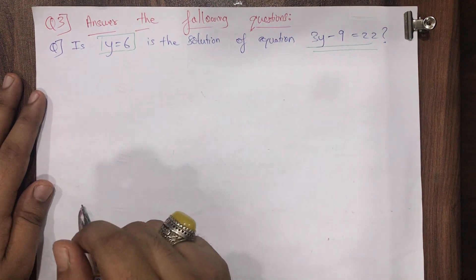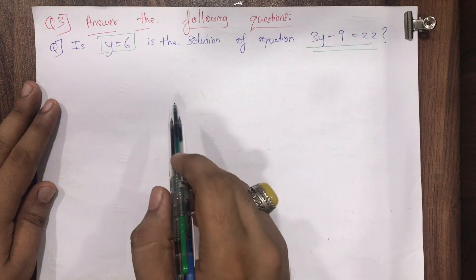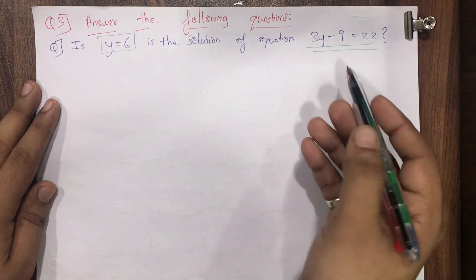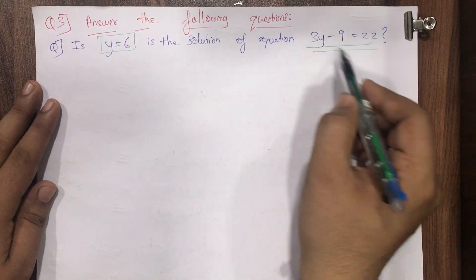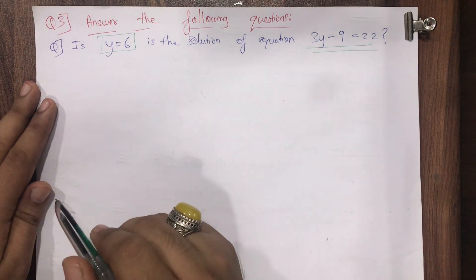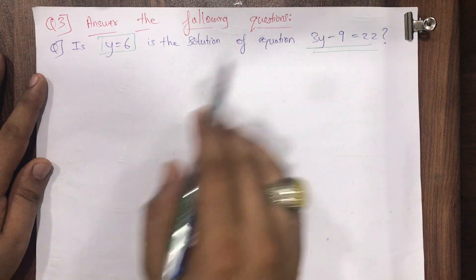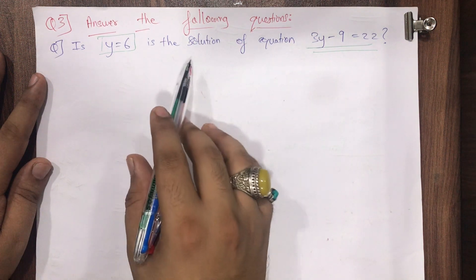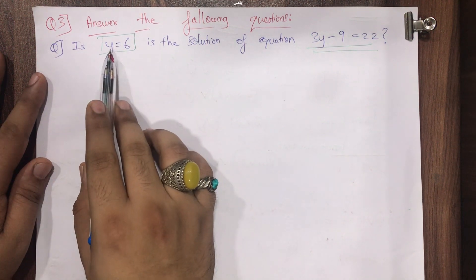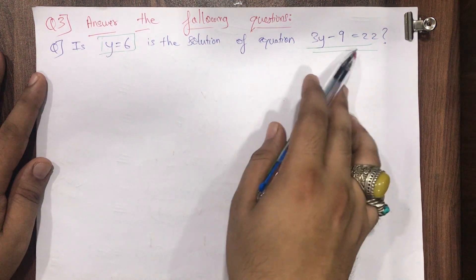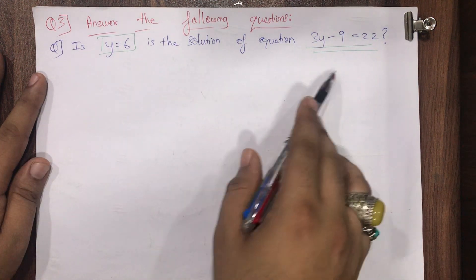Up till now, what we were doing was always solving any given equation and getting the value of the unknown, or in other words the value of the variable. In this equation the unknown is y, the variable is y. But here they are asking us whether y equal to 6 is the solution of this equation. So what we have to do is just check — we have to substitute the given value.